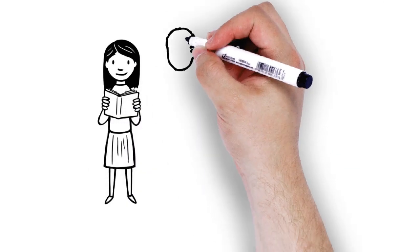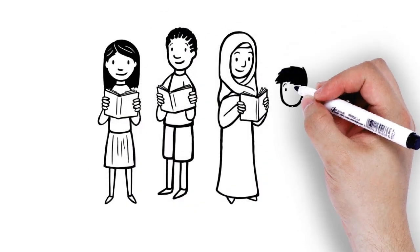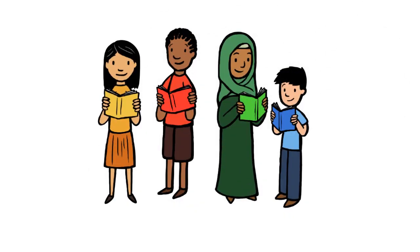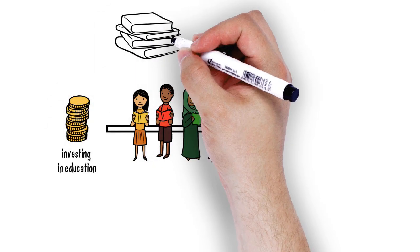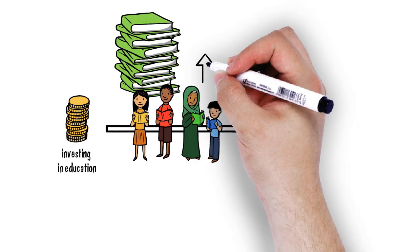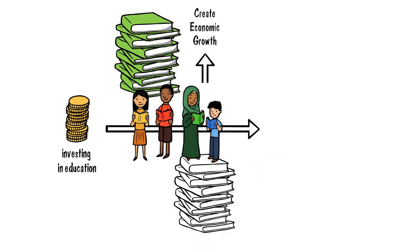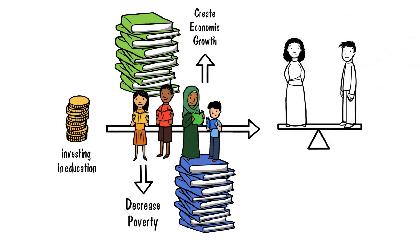But every child has a right to education, and giving every child a fair start in life is the right thing to do. It also makes economic sense. If all children learned basic reading skills, 171 million fewer people would live in poverty. That's huge!